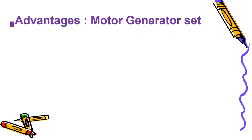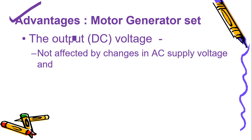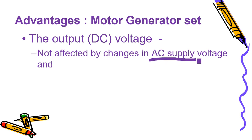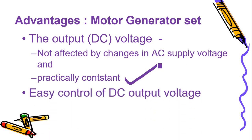So what is a motor generator set finally? There is a prime mover to rotate the DC generator, and for bigger units it will be a synchronous motor. The output DC voltage will not be affected by the AC supply voltage - that is the first advantage. Any variation of the AC supply will not affect the DC output, and it will be practically constant. Especially when a synchronous motor is used as prime mover, the DC output will be almost constant.